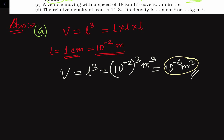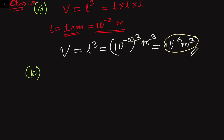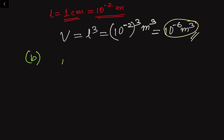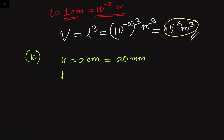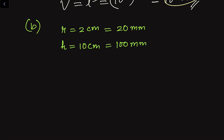In part B, the radius r is equal to 2 centimeter. Since 1 centimeter equals 10 millimeter, 2 centimeter equals 20 millimeter. The height h is equal to 10 centimeter, which equals 100 millimeter. These are the given dimensions converted to millimeter. Now we have to use the formula for surface area.